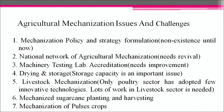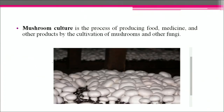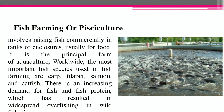New agriculture practices include animal husbandry, poultry farming, apiculture, fisheries and mushroom culture. Poultry farming is the raising of domesticated birds such as chickens, ducks, turkeys and geese for the purpose of farming meat or eggs for food. More than 50 billion chickens are raised annually as a source of food — both their meat and their eggs. Mushroom culture is the process of producing food, medicine and other products by the cultivation of mushrooms and other fungi. Fish farming or pisciculture involves raising fish commercially in tanks or enclosures, usually for food.